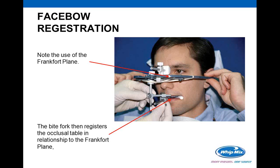Here is a typical registration using the Whitmix face bow. The Frankfurt plane is the actual bow — the legs placed into the patient's ears, positioned by the nasion in the case of the Whitmix unit. The bite fork, held in the patient's mouth, registers the occlusal table in relationship to that Frankfurt plane. This information is then transferred to a large frame articulator.